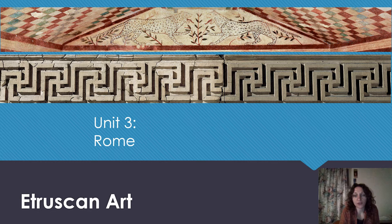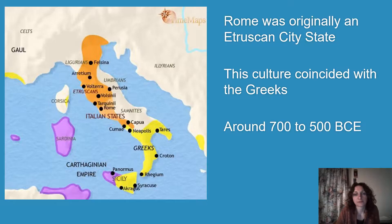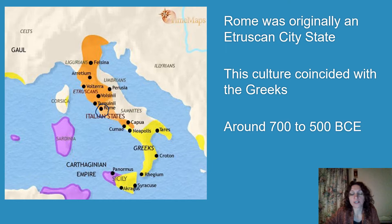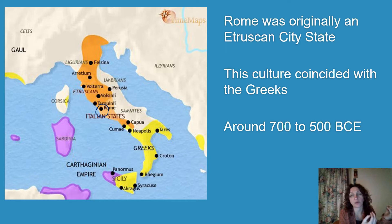Hello again art history students, welcome to another lecture. We are now in Unit 3 and we're talking about Rome today, but first we're going to talk about Etruscan art, which is sort of like the pre-Romans. Rome was initially a city-state of the Etruscan Empire, and this culture coincided with the Greeks. The Romans kind of saw themselves as the inheritors of the artistic traditions of the Greeks, so a lot of that vocabulary from the Greek lecture is going to come back into play.